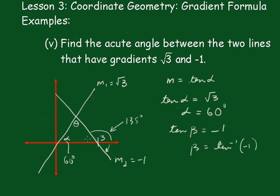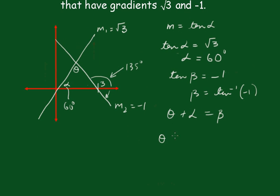Now from simple geometry we know that the exterior angle of the triangle must be equal to sum of the two interior opposite angles. So we know that θ plus α must be equal to β. So θ plus 60 degrees must equal 135 degrees. So θ is equal to 135 minus 60, which gives me 75 degrees as the acute angle between the two lines.